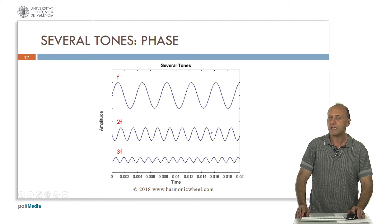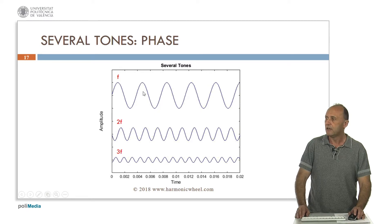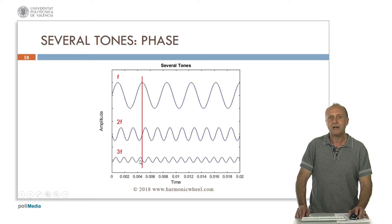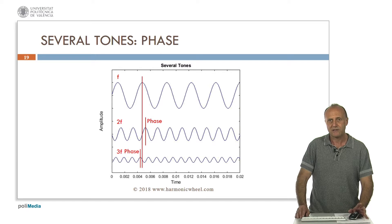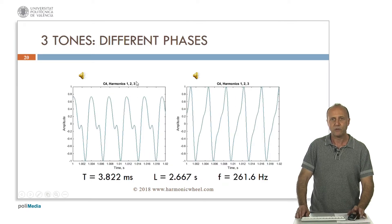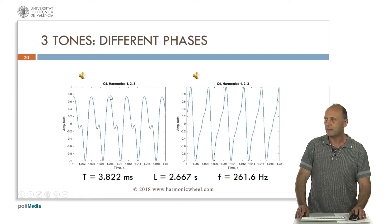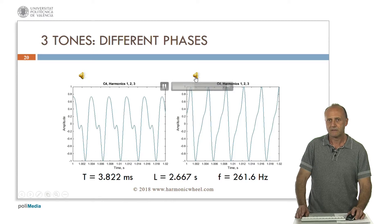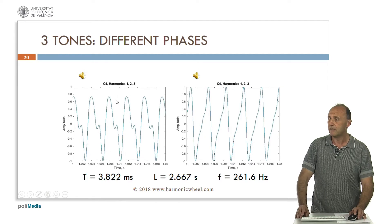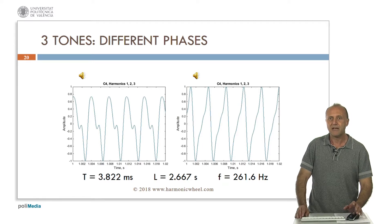When we have several tones as in this case, another concept appears which is the phase. Here we have three tones. The first one has the maximum located here but the other maximums are located at different times. These differences are called the phases of the tones. Usually we will represent on the spectrum only the magnitude and not the phases. Here we have an example with three harmonics with different amplitudes and phases, and then the three harmonics with the same amplitudes but with changed phases. The waveforms are different but the sounds are practically the same.